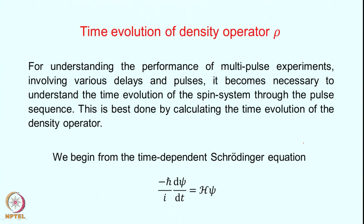The same will happen for y-magnetization as well. Various kinds of manipulations create these situations. As a result of various pulse sequences, it becomes necessary to actually calculate the density operator and then make the measurement. The density operator calculation depends on time if you are applying a pulse sequence with lots of pulses along the time axis. Therefore we need to consider the time evolution of the density operator. For understanding multiple pulse experiments, it becomes necessary to understand the time evolution of the spin system through the pulse sequence, best done by calculating the time evolution of the density operator.